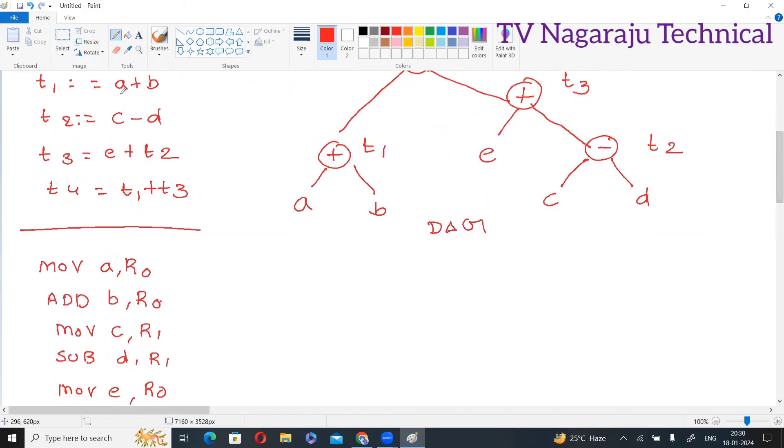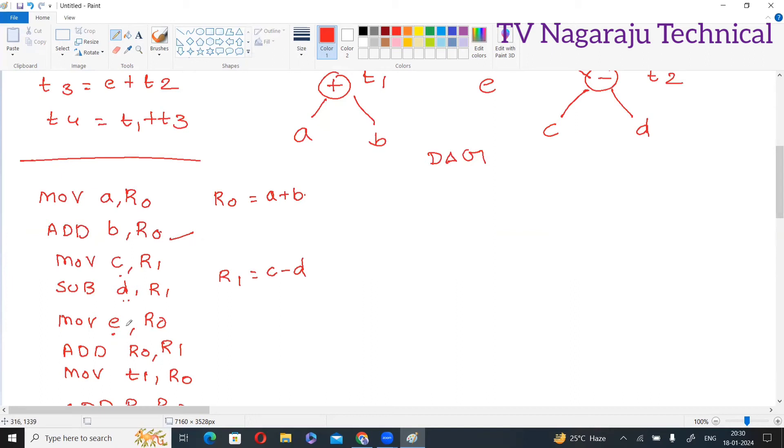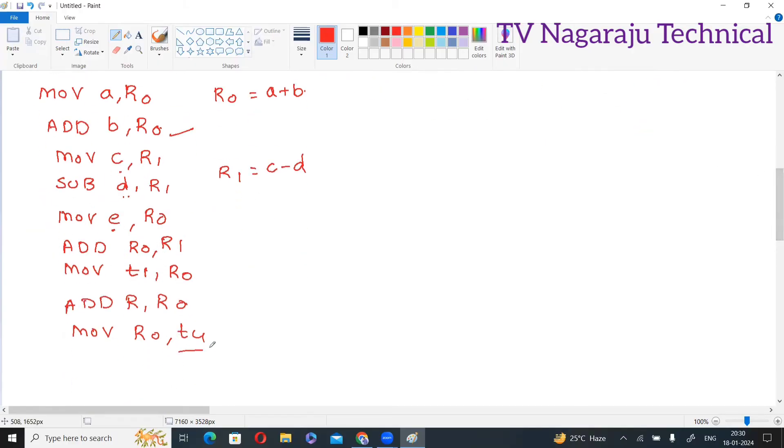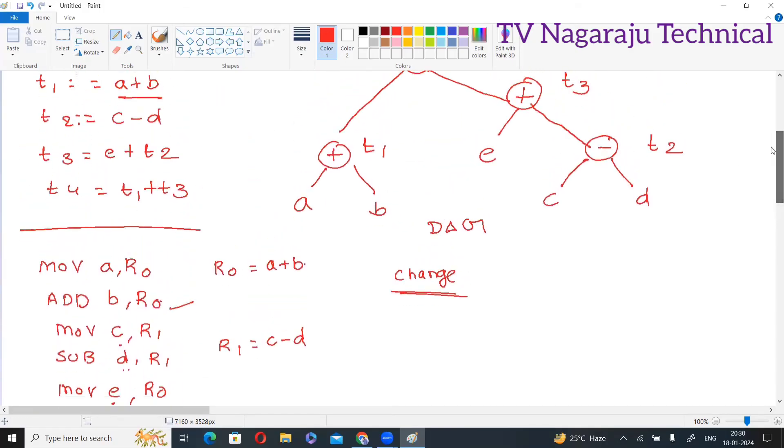So this expression move a comma r0, then perform addition. The result is placed in r0. R0 consists of a plus b. Move c comma r1, subtract d comma r1. Now r1 consists of c minus d. Then I am performing addition. Move e comma r0. Now r0 consists of a plus b, and I am moving e. Then addition between r0 and r1, and finally move to t4. This is the order. If we change the ordering of the sequence...